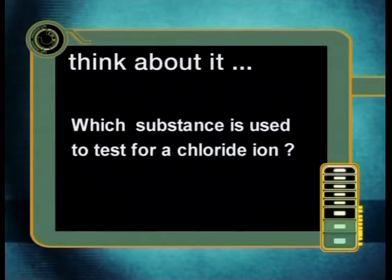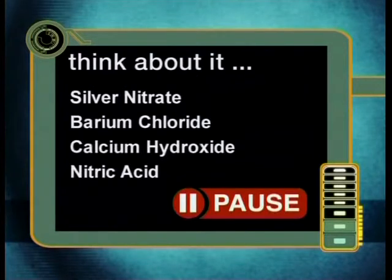We are going to test for the chloride first. Do you remember which substances we were given to aid our investigation? Which substance is used to test for a chloride ion? From our previous lessons you will remember that silver nitrate is used to test for the presence of the chloride ion. If the chloride ion is present, a white precipitate of silver chloride is formed as soon as the silver nitrate is added to the solution. We will also add nitric acid to see if the precipitate remains.